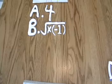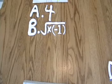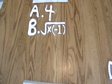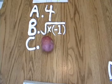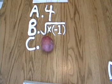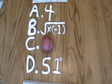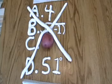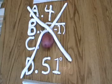What's the answer? Is it a, 4? Is it b, the square root of x times negative 1? Is it c, potato? Or d, 51 degrees? It's none of those, of course! The correct answer is... Two! Two!